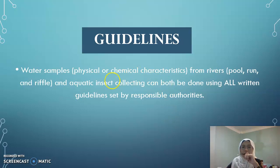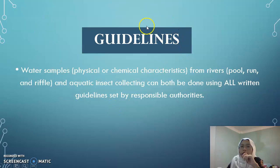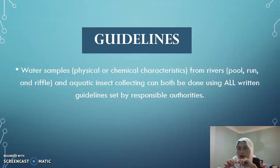Moving on to the next part, which is about guidelines. Water samples and physical or chemical characteristics from three different river habitats — pool, run, and riffle — as well as aquatic insect collecting, can both be done using written guidelines set by responsible authorities. Different fieldwork has different guidelines, but generally for aquatic ecology, there are specific written guidelines when conducting any aquatic activity.